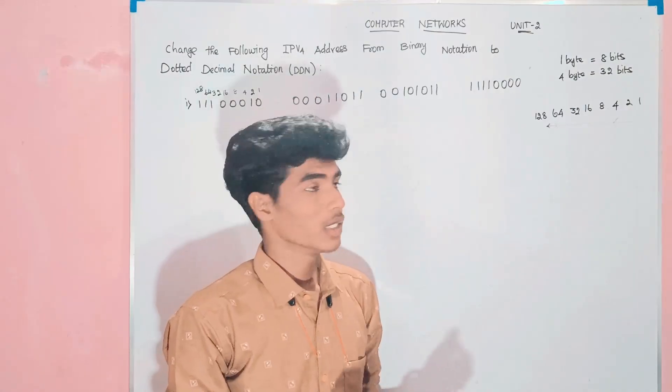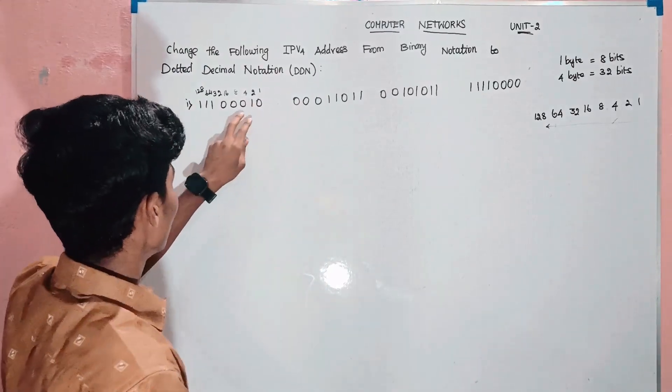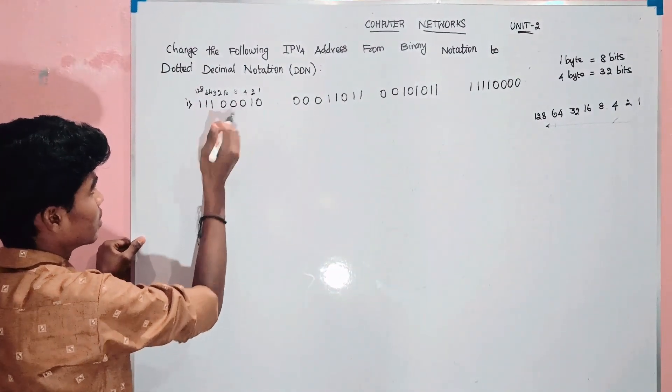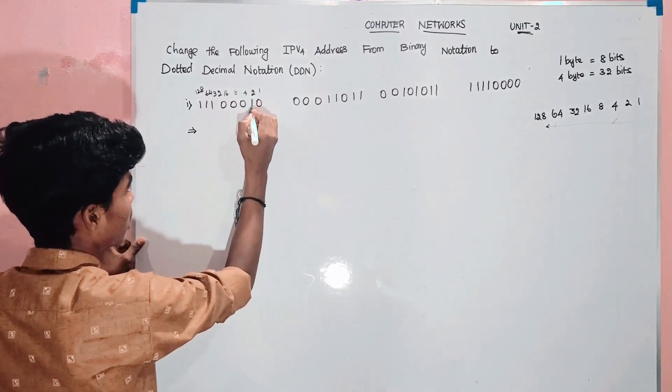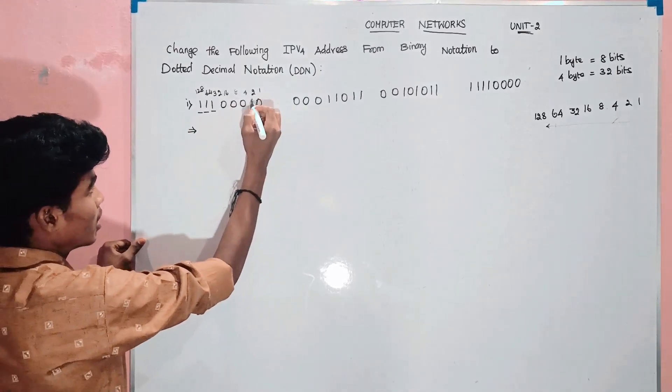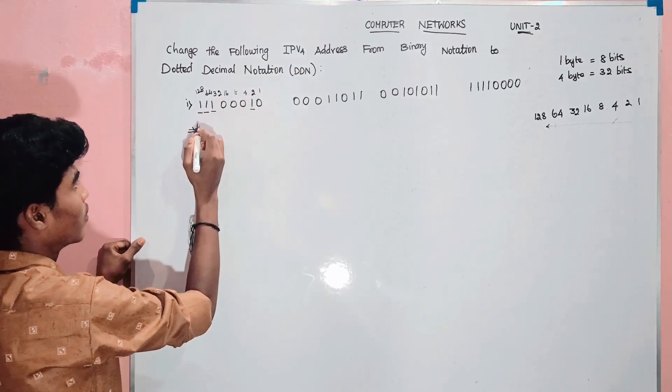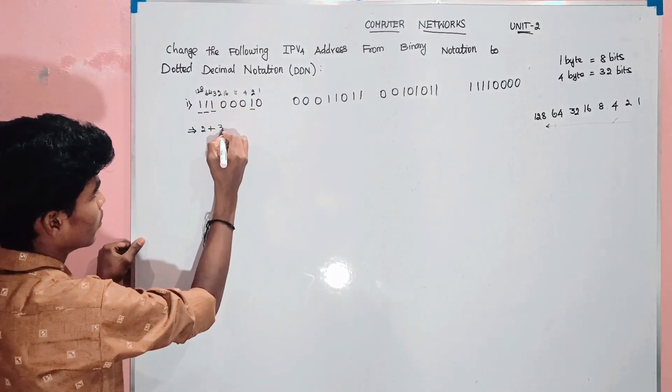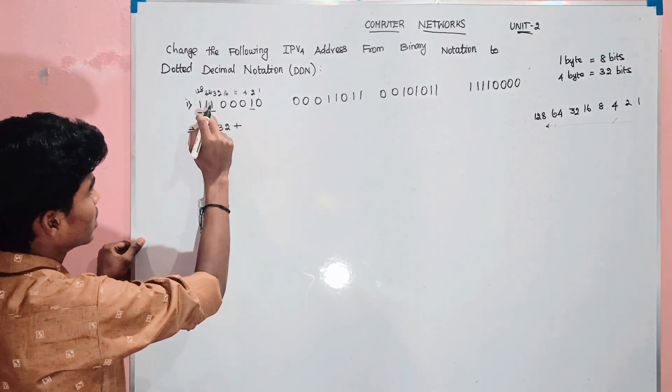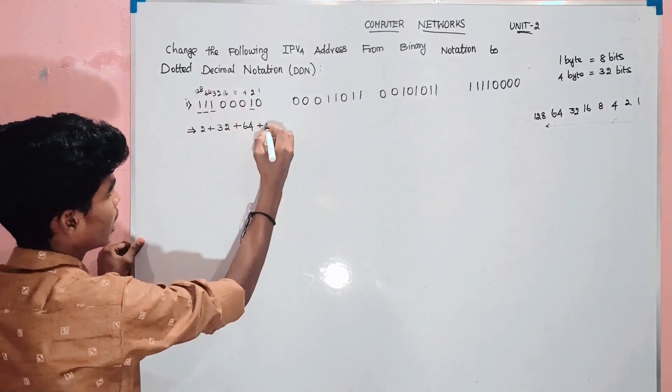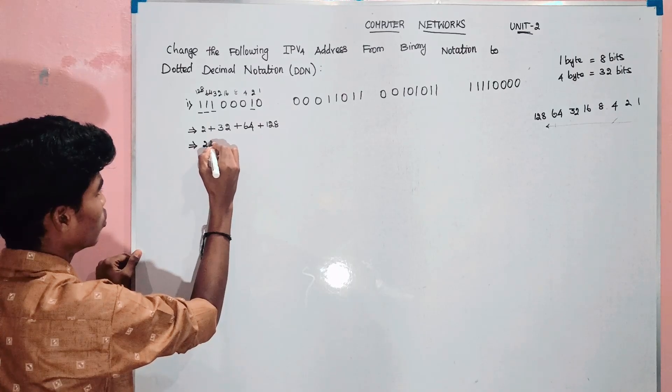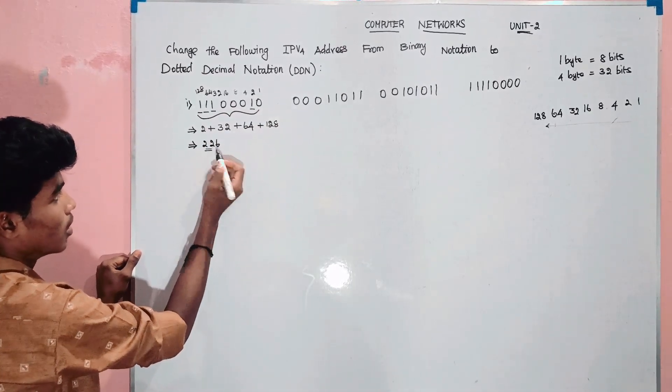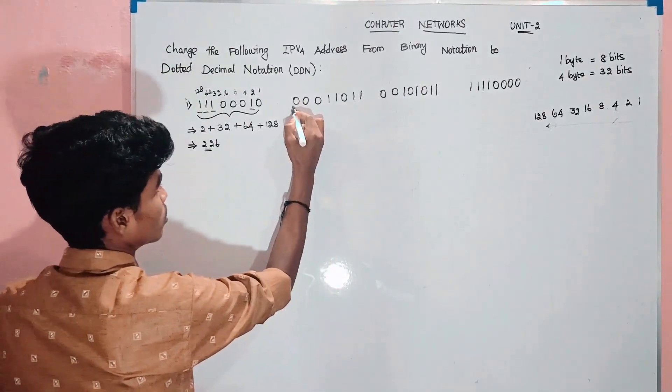So we assign binary value to the binary value. In this binary conversion, we assign simple method. So one binary number, we assign one value. If we calculate this, we can simplify this. We say one that one is 1. If we determine where we choose values, if we compare the values to the binary value, for example, this one is 2, 2 plus. Next, the other value is 32. Value from 32 plus. Next, the next one is 64 plus 128. If you add one number, 226. So in the binary number, dotted decimal value, 226.